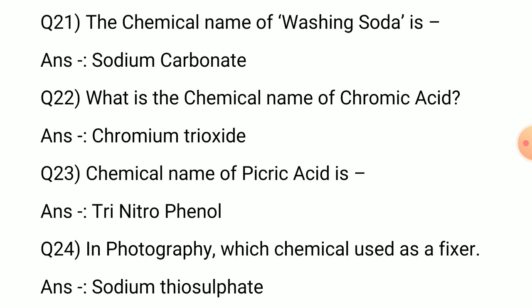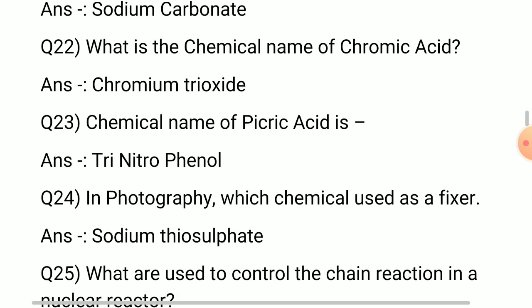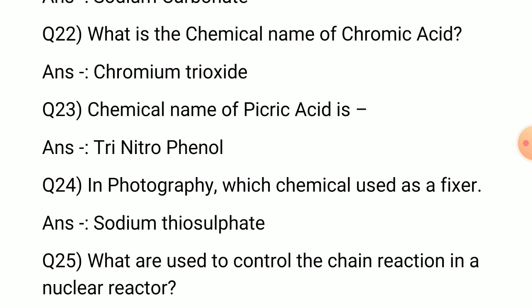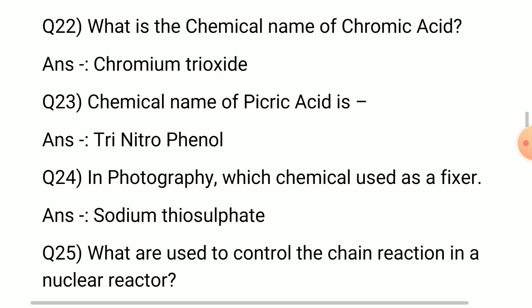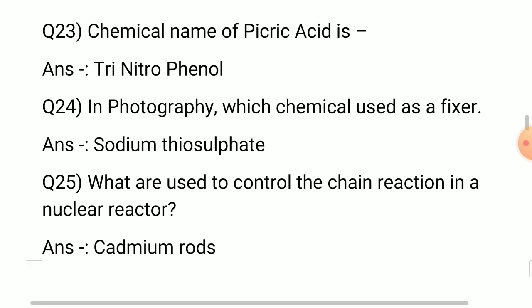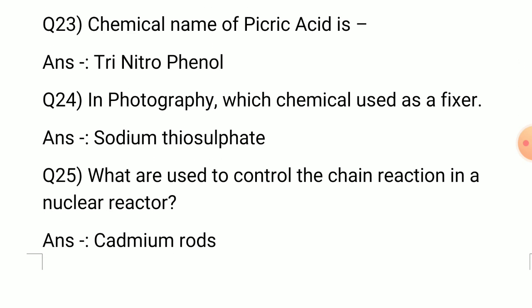Question number 22: What is the chemical name of chromic acid? Answer: Chromium trioxide. Question number 23: The chemical name of picric acid is? Answer: Trinitrophenol.